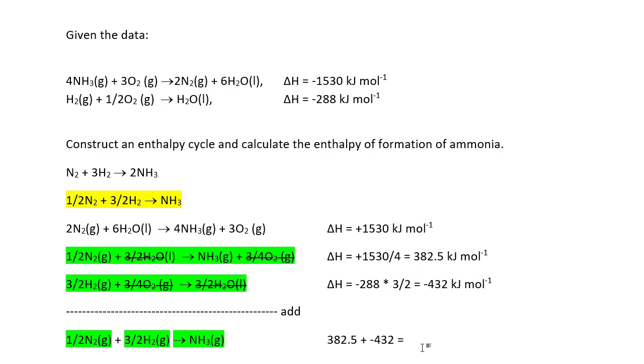382 plus minus 432, and that comes to minus 49.5 kilojoules. So that is the enthalpy of formation of ammonia, as defined.